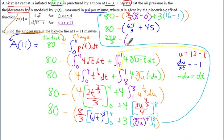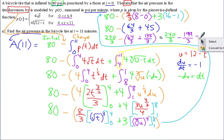Converting to thirds: 80 is 240/3. Then minus 64/3, plus 45 converted to thirds is 135/3. Adding 64/3 and 135/3 gives 199/3. So 240/3 minus 199/3 gives 41/3. Don't forget the units — P of t was psi per minute, but when you integrate that it goes back to psi. So the air pressure at time eleven is 41/3 pounds per square inch.